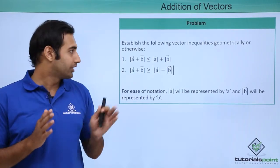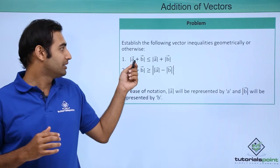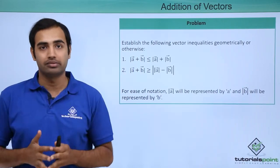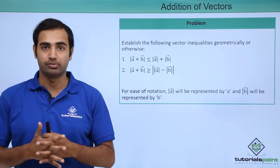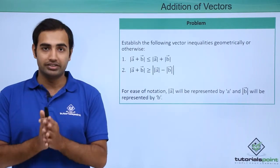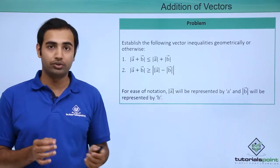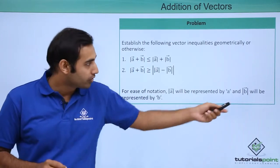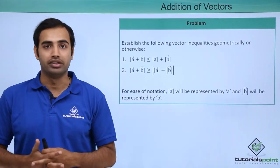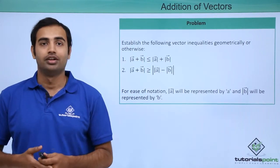If you carefully look at this question, we are interested in the minimum value and the maximum value of the vector sum A plus B. In this problem, we will be interchangeably using modulus of A and small 'a' to represent the magnitude of A, and modulus of B and small 'b' to represent the magnitude of B. As a student, you must be careful of the same.